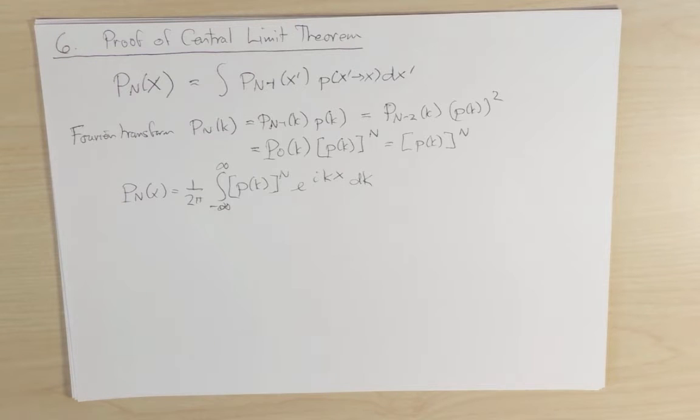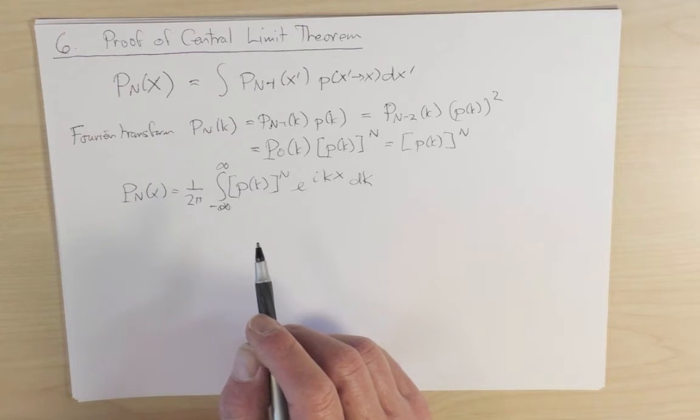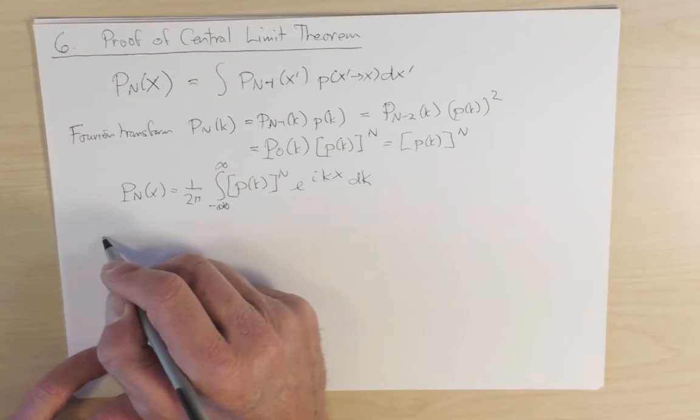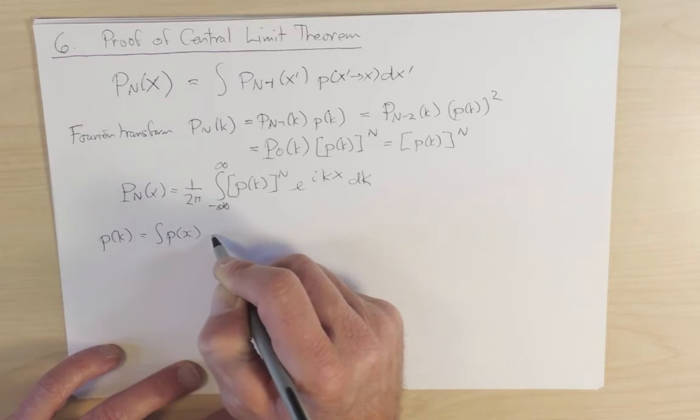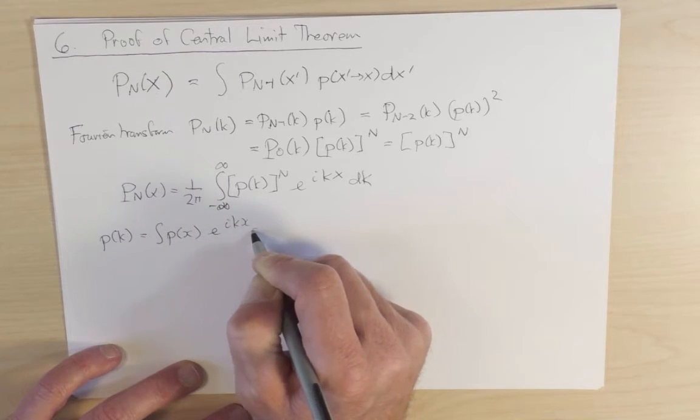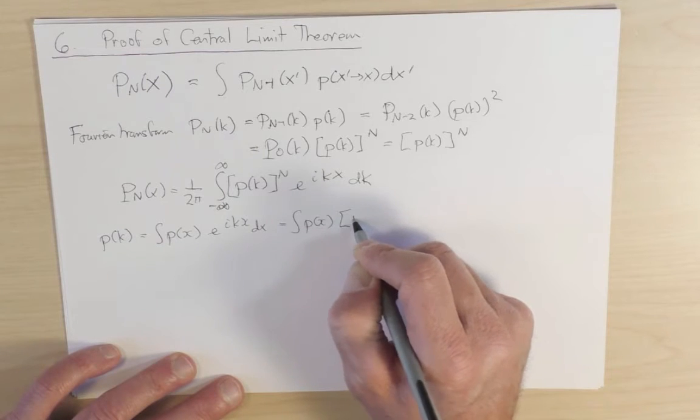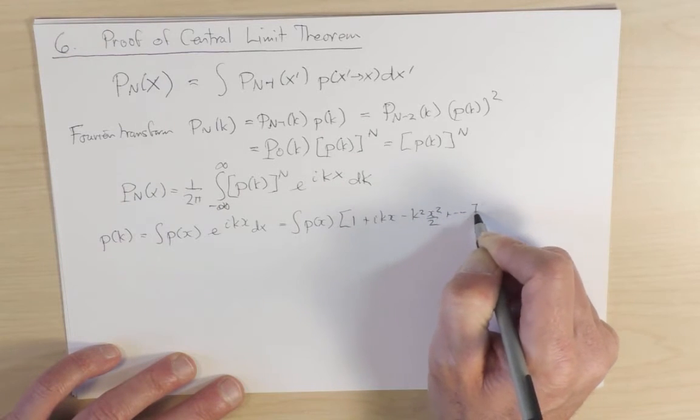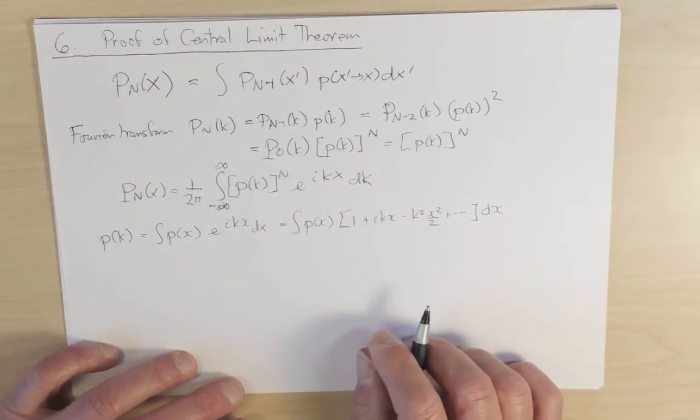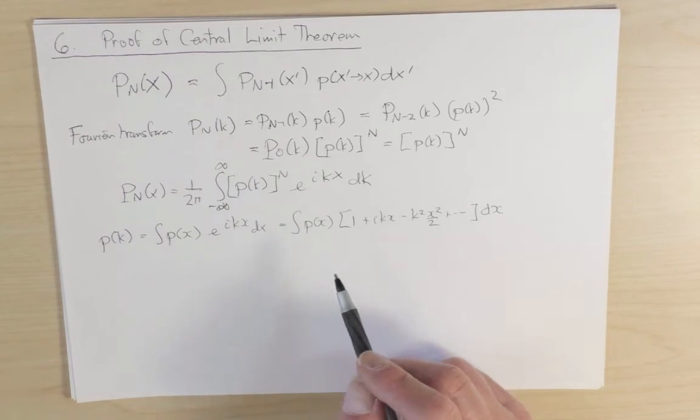Now I'm going to make use of the fact that the single step distribution has this feature that the mean displacement and mean square displacement are finite. Let's return to little p of k, which is the Fourier transform of little p of x. So p of x e to the i k x dx. Let's expand this in a Taylor series. We have p of x times 1 plus i k x minus k squared x squared over 2, plus higher order terms dx. The first term, p of x times 1 dx, is the probability that I hop anywhere in a single step, and by construction this equals 1.